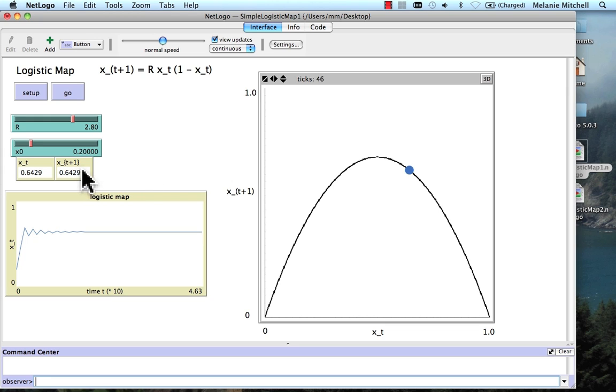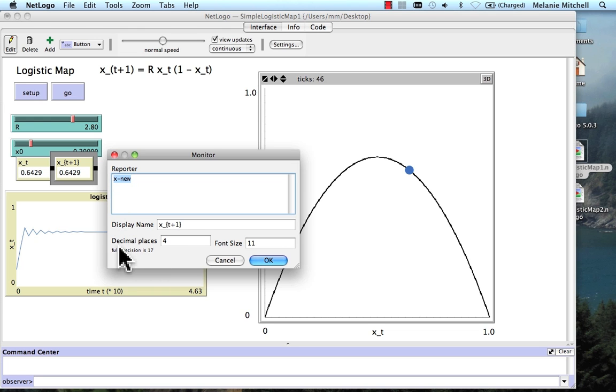One thing to note about NetLogo is I can go into one of these output boxes, and you can set the number of decimal places you want to see. And the maximum it allows you is 17.